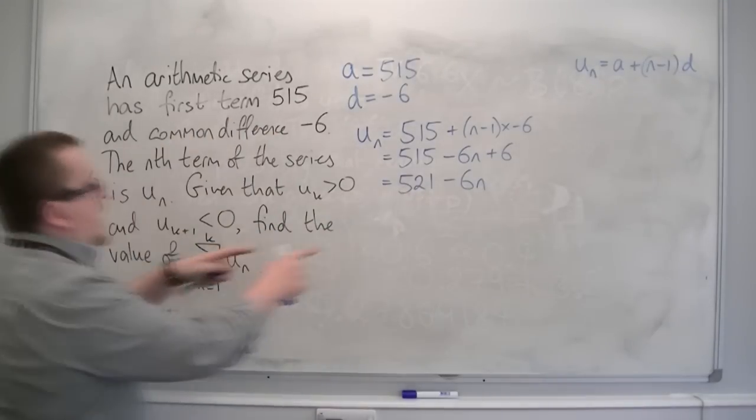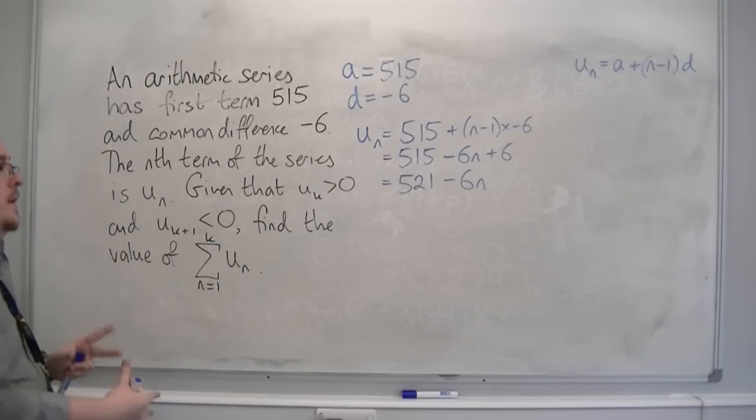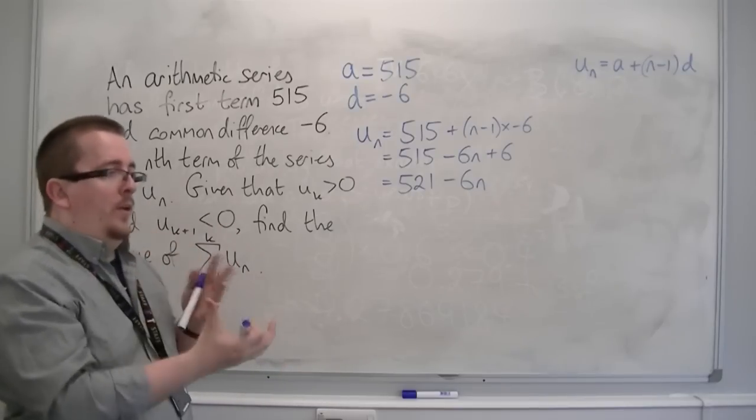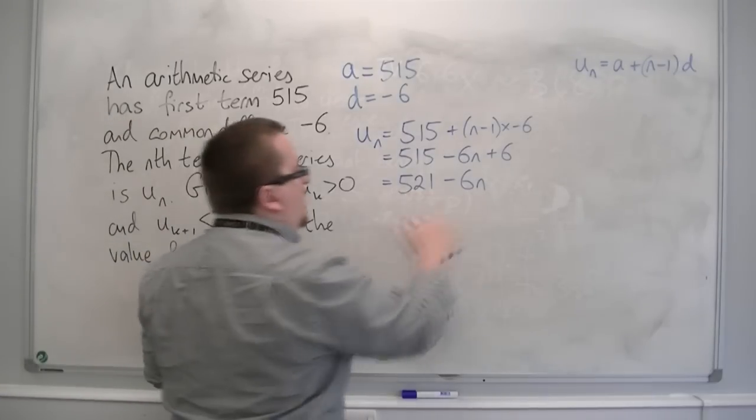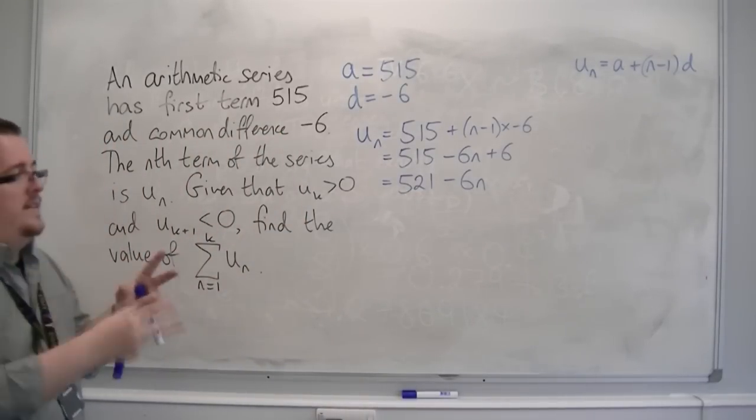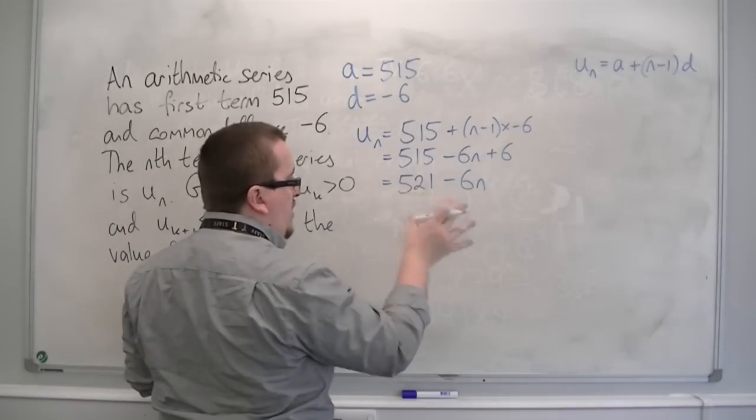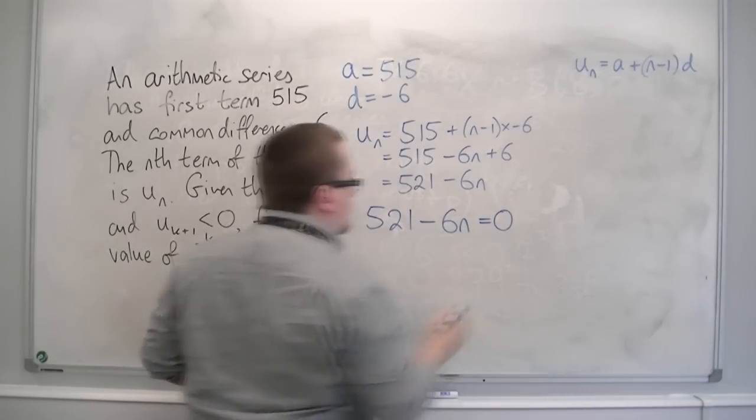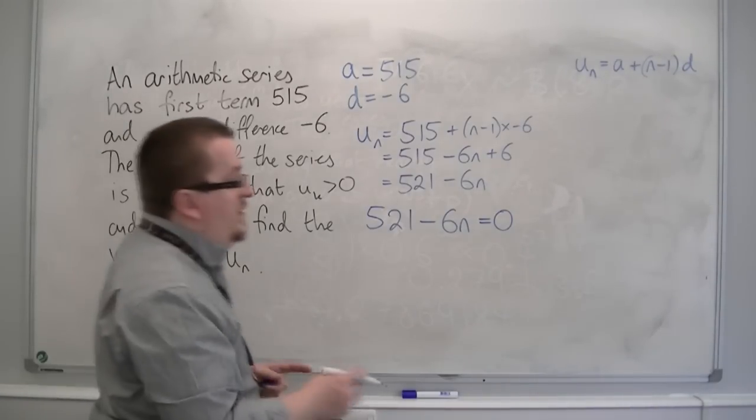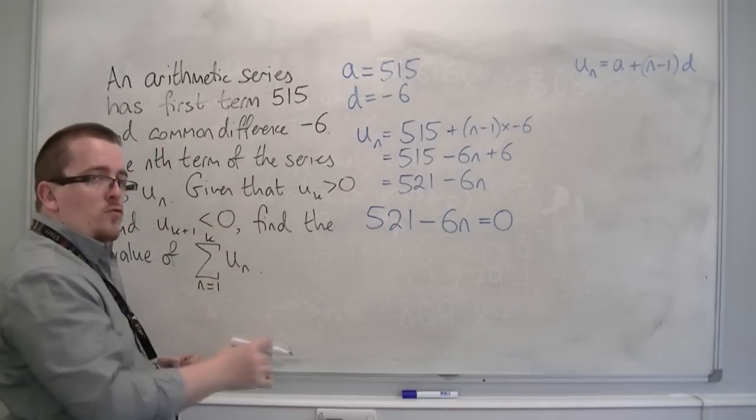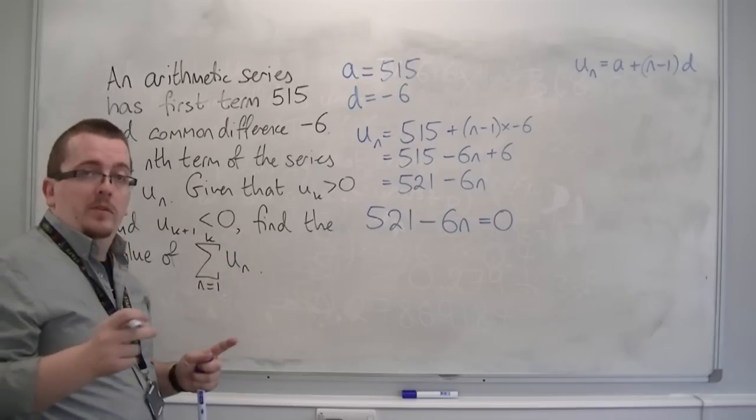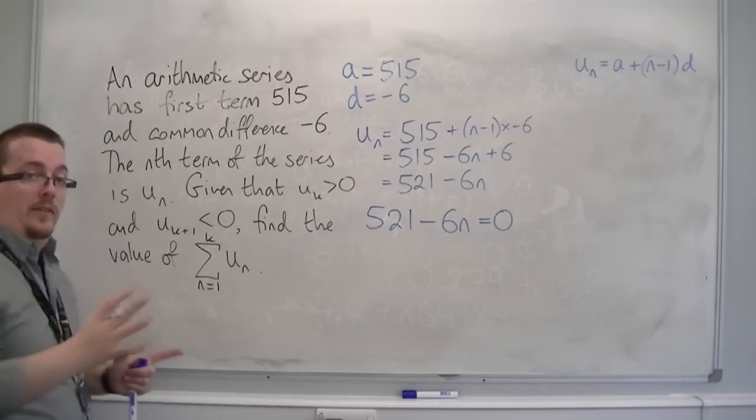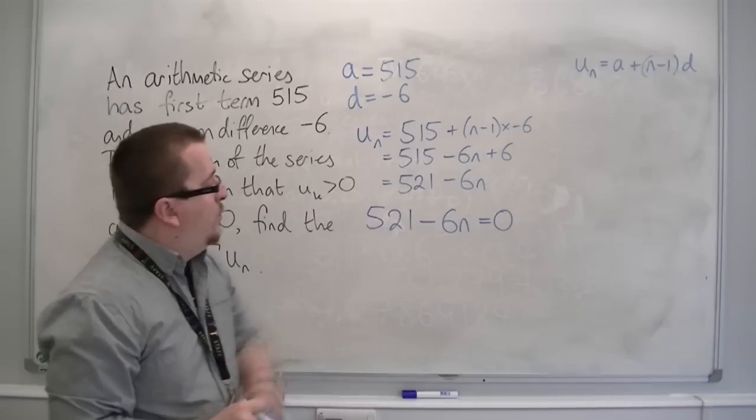So I want to find out which is the last term—well, not the last term ever, but the last positive term. So at some point, this series is going to reach 0 or a negative element. So I want to know which term that is. So if we put this equal to 0 and solve that, then I can find the value of n that will get me to 0. It will probably get me a decimal unless 0 is part of the sequence, which this is telling me that it isn't.